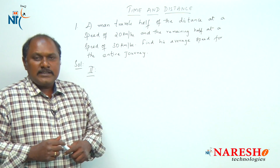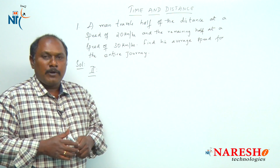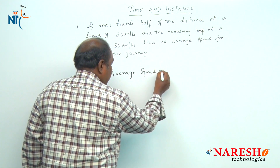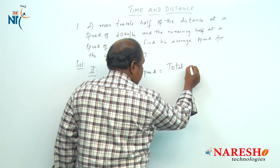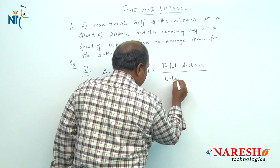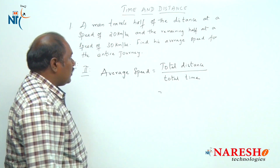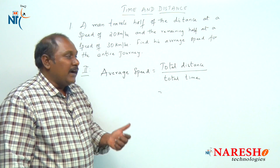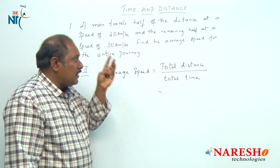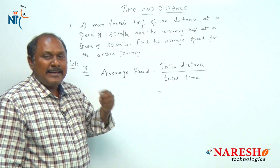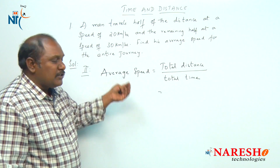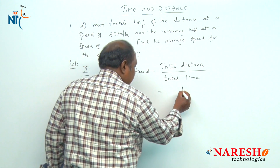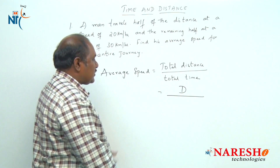Now let us see the second method to solve this problem. Generally, average speed is given by total distance divided by total time. Here we do not know what the distance is, but he is traveling the first half at a speed of 20 and the next half at a speed of 30. Let us assume the total distance he is traveling is d. So total distance is d.